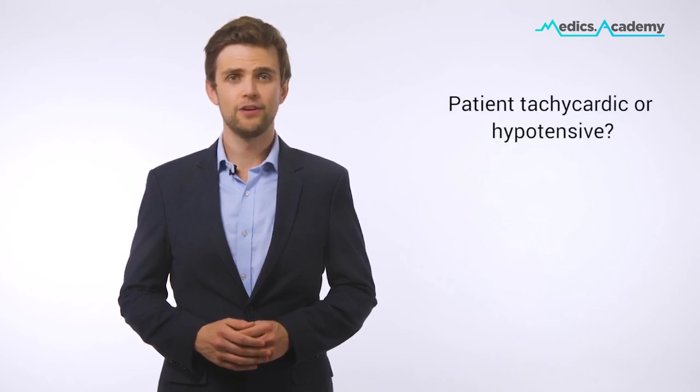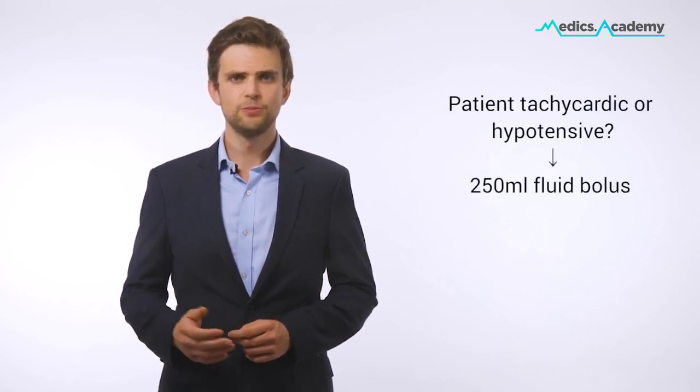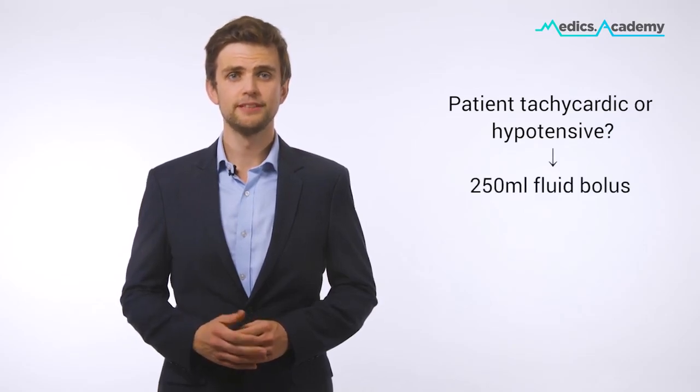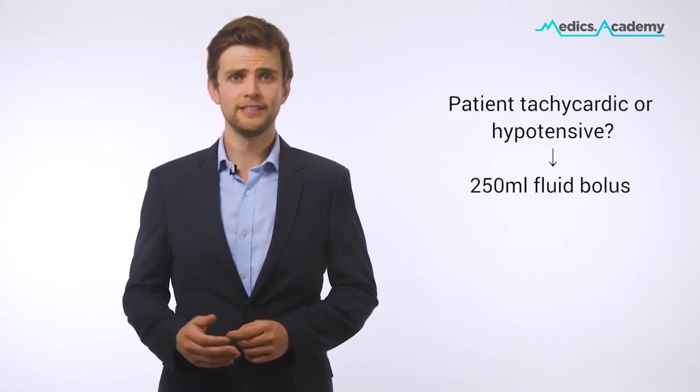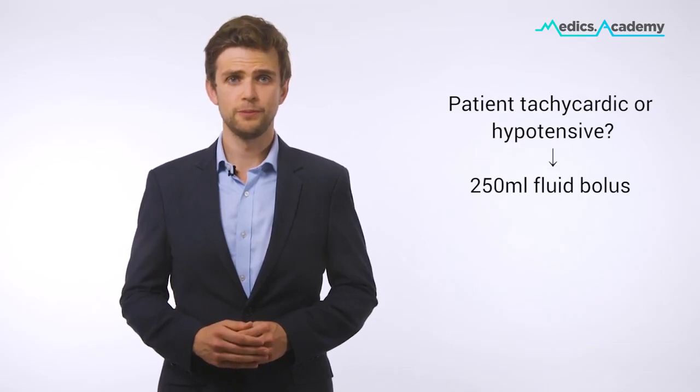To determine the rate of administration, if the patient is tachycardic or hypertensive, it's sensible to start with 250 mils as a fluid bolus, repeating as necessary according to the patient's response.